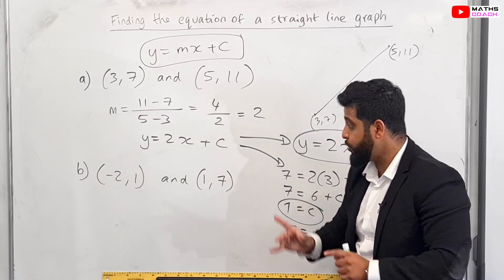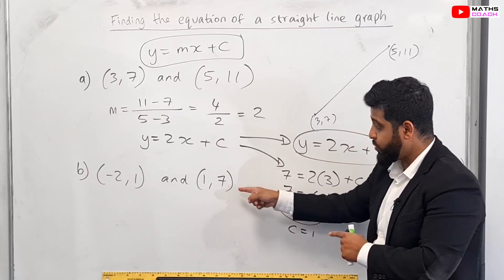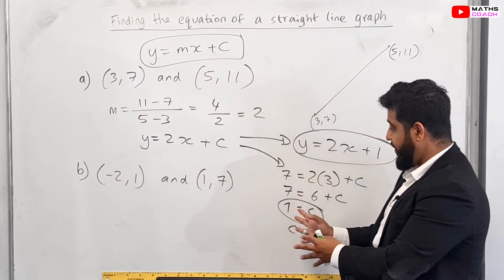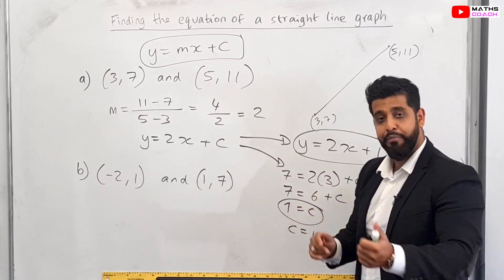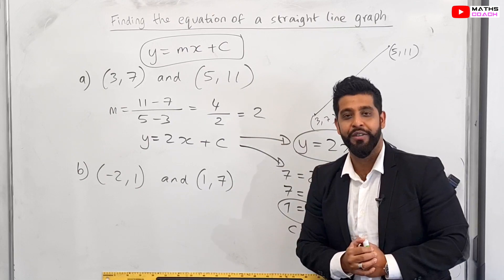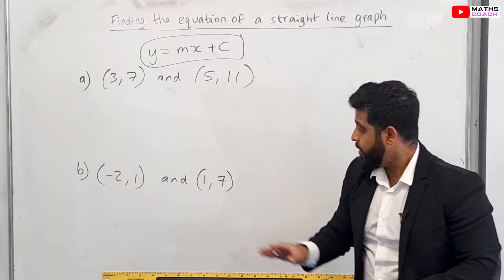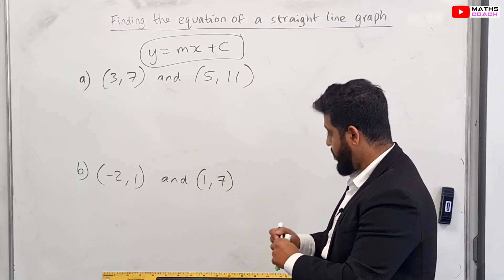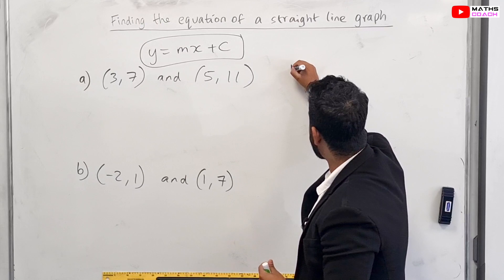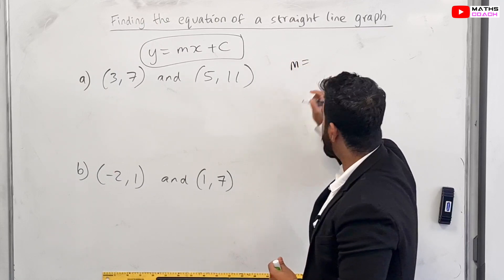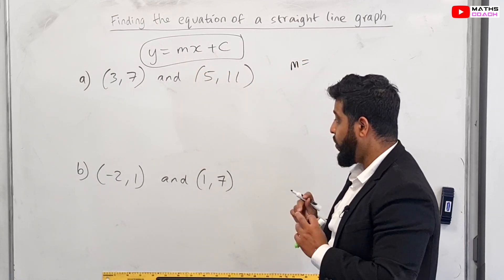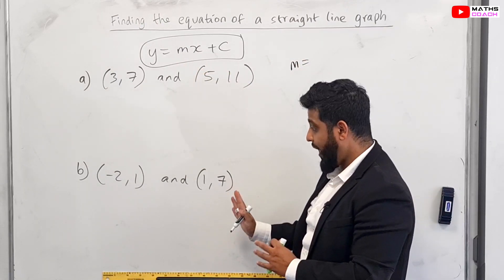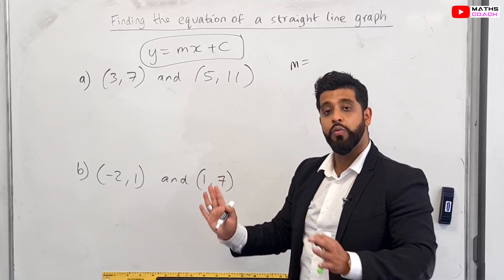Now try the second set of coordinates yourself — pause the video and give it a go, then press play when you're ready to go through it with me. Let's have a look. To start, we find our gradient m. Once again, m = y1 − y2.